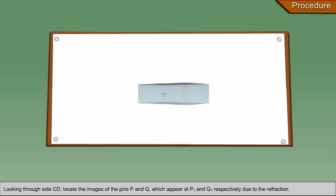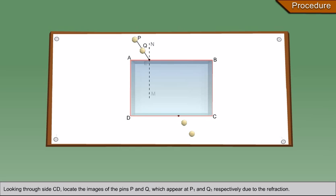Looking through side CD, locate the images of the pins P and Q which appear at P1 and Q1 respectively due to the refraction.